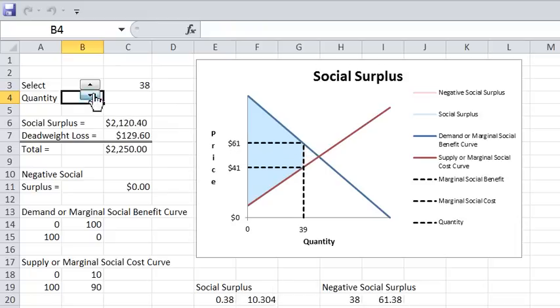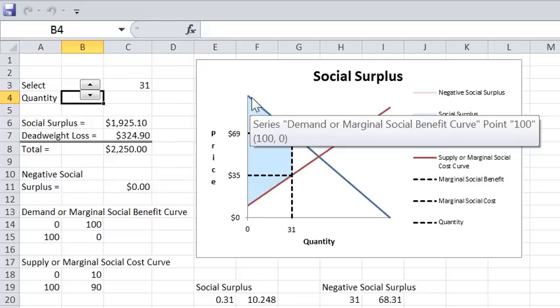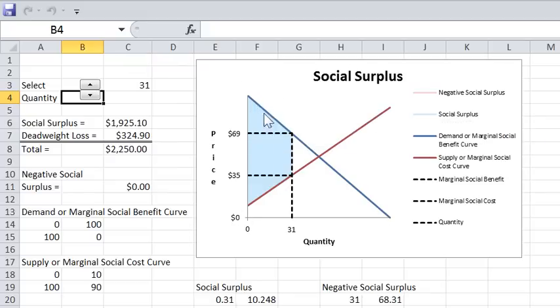The issue is to interpret what's actually going on in the graph and then if you explore later what's going on in the plotting of this. This downward sloping blue line is the demand or marginal social benefit curve. This upward sloping red line is the supply or marginal social cost curve.